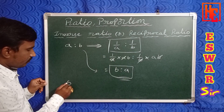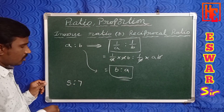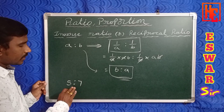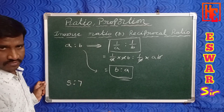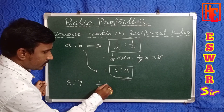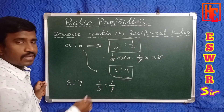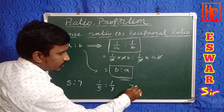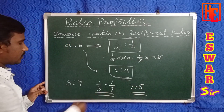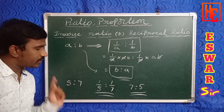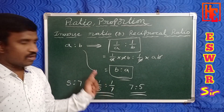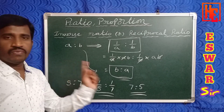For example, take 5 is to 7. Find the inverse ratio or reciprocal ratio of 5 is to 7. Write 1/5 is to 1/7, or otherwise write 7 is to 5. So the inverse ratio of 5 is to 7 means 1/5 is to 1/7 or 7 is to 5.